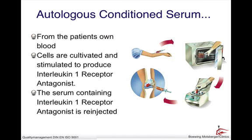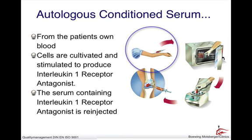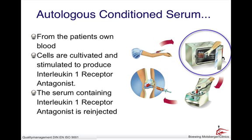Blood samples are taken from the patient's vein in the arm with a special syringe. Glass beads coated inside the syringe induce the white blood cells — the monocytes — to synthesize up to 30 times more of the protective protein IRAP, which inhibits osteoarthritis. This process requires a temperature of 37 degrees and takes place in an incubator that mimics normal body temperature, creating an optimum environment for protein synthesis.